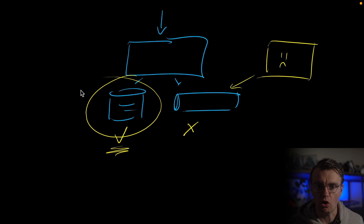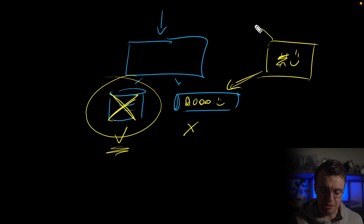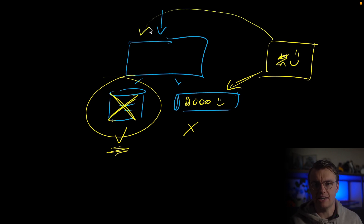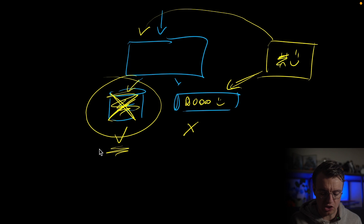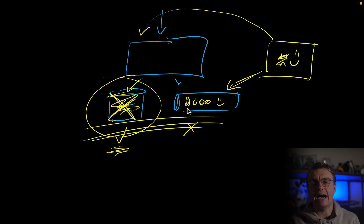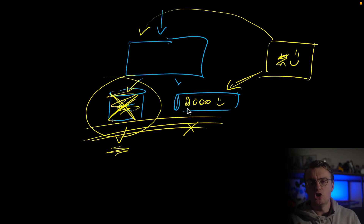The second and much more problematic scenario is that the state fails to write to your database but the events get published successfully. Your downstream system thinks they're happy because they received events, but if they then make a callback needing more information, your application goes to the database and can't find that information. Imagine this is an order — the application doesn't know the order exists but the downstream system thinks it does. There's no easy way to reconstitute state at the point the event was published. This is why the outbox pattern is so important.